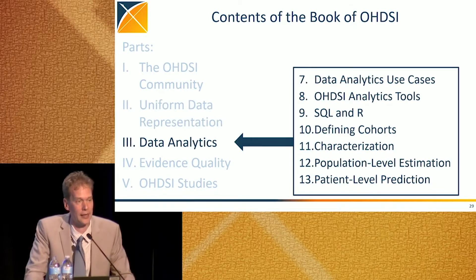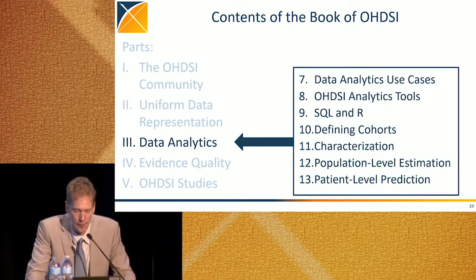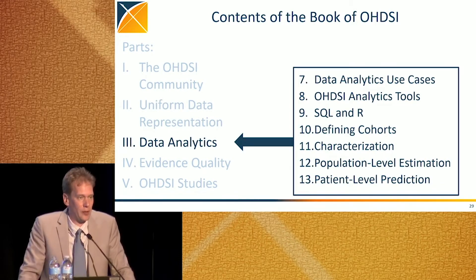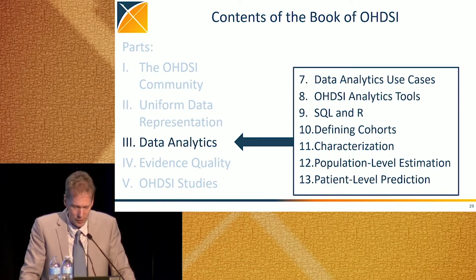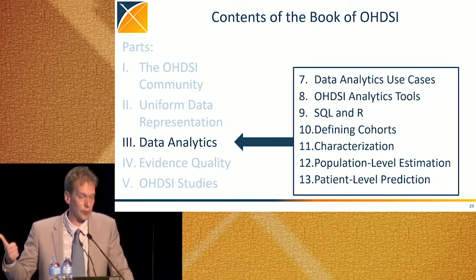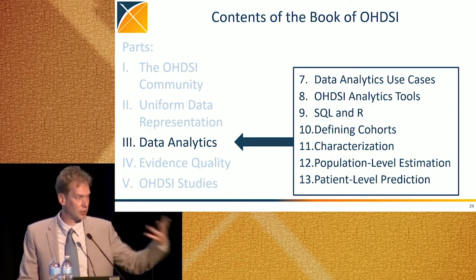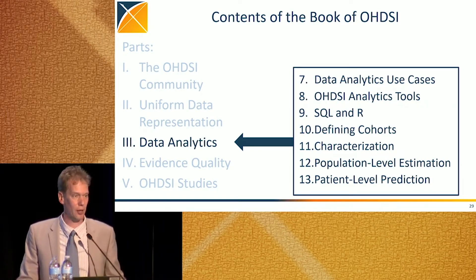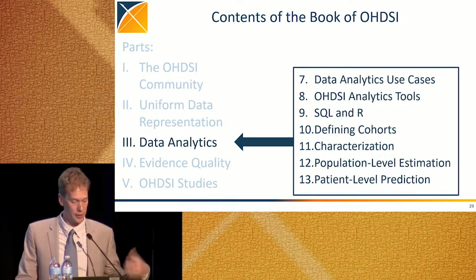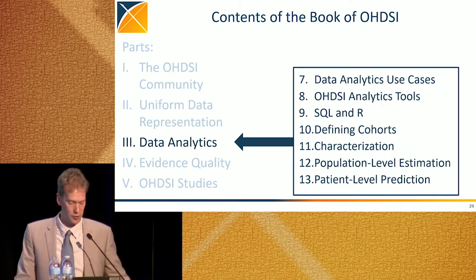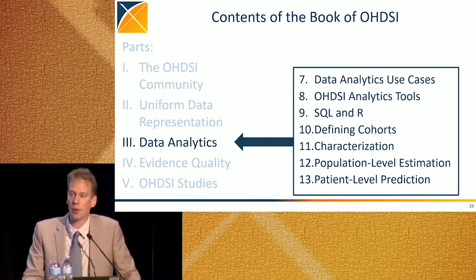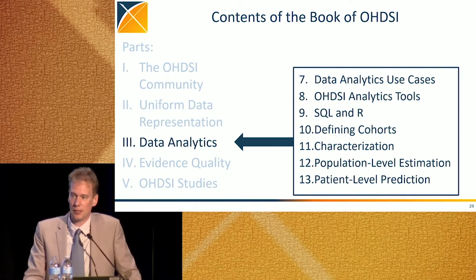Part three is data analytics. Here we first describe the three primary use cases defined in Odyssey: characterization, population-level estimation, and patient-level prediction. It then goes into the tools available for those use cases, how you can define cohorts, and then goes into each use case in detail.